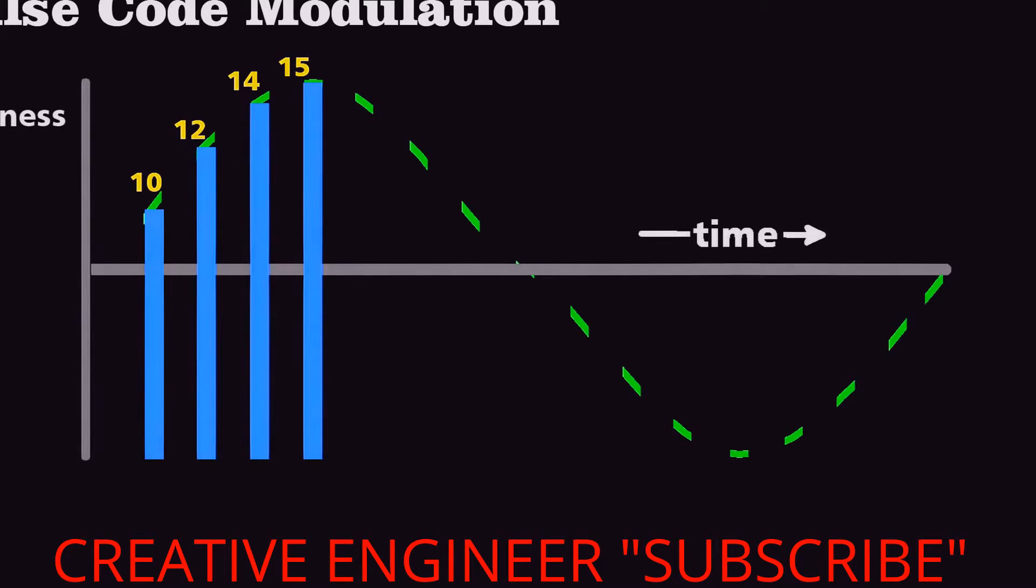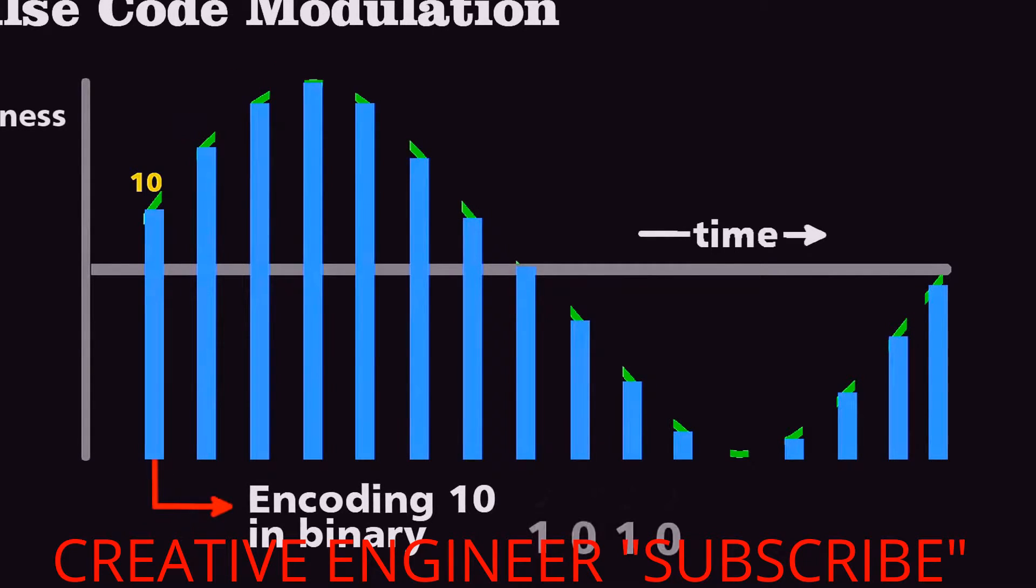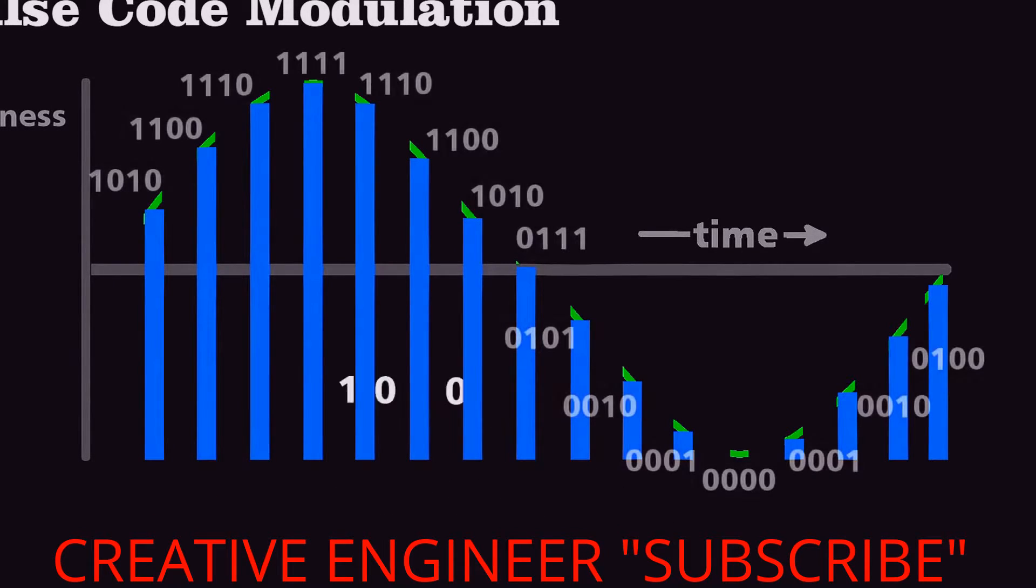We then take each section and convert its amplitude to a series of ones and zeros. The first bar of value 10, when encoded, becomes one, zero, one, zero. We can do this for each section of the curve.